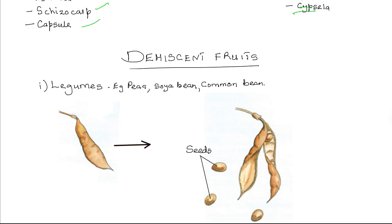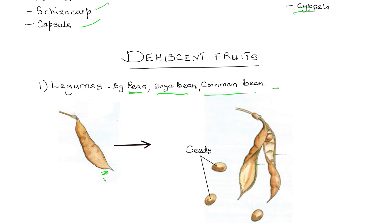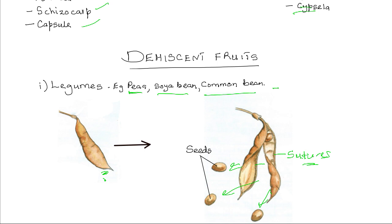The legumes or pods include the peas, soya beans, and the common bean pods. A pod is formed from a single carpel, and on drying the pericarp splits along two edges. What characterizes the pod is that it splits along two edges — there are two lines of weakness known as sutures. A pod or legume splits along two edges, scattering the seeds and in this way helps in the dispersal of the seeds.